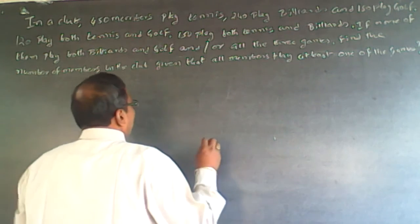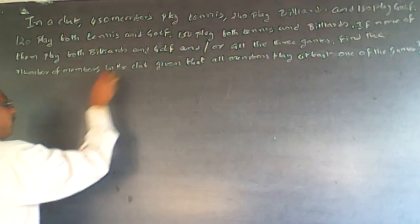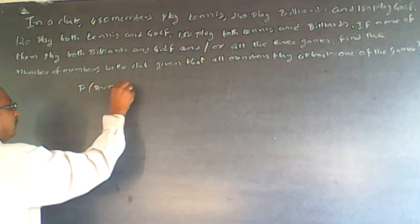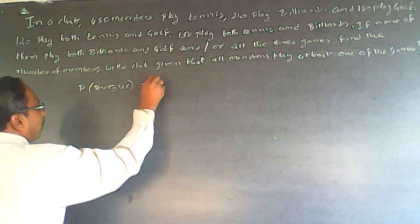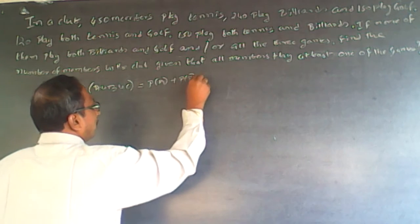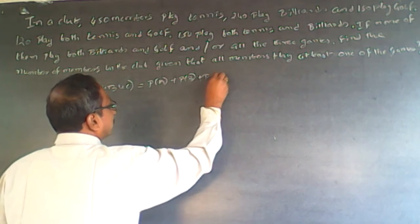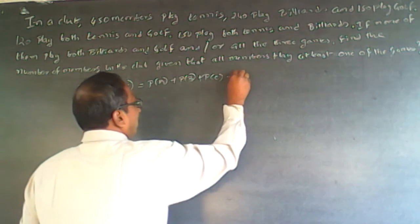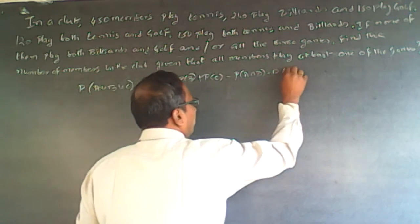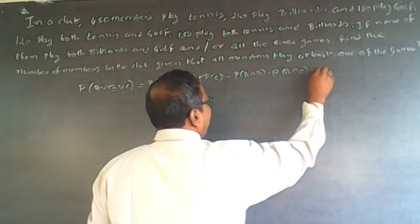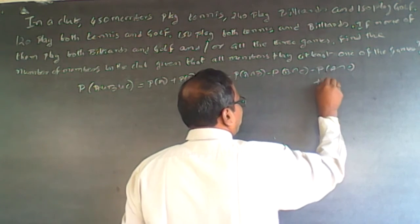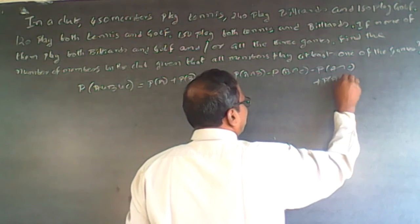So it will be P of three sets, so P of A union B union C will be equal to P of A plus P of B plus P of C minus P of A intersection B minus P of B intersection C minus P of A intersection C plus P of A intersection B intersection C.